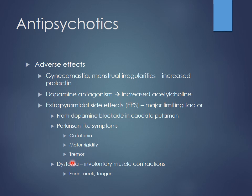Dystonia can occur as well — involuntary muscle contractions usually in the face, neck, and tongue. There's a case where a family bought what they thought was street Valium, but the diazepam tablets looked almost identical to haloperidol tablets. They all developed acute dystonias and came to the ER. The drug dealer had apparently given them haloperidol instead. This is a very common side effect seen especially with large doses of haloperidol, a very potent D2 receptor blocker.